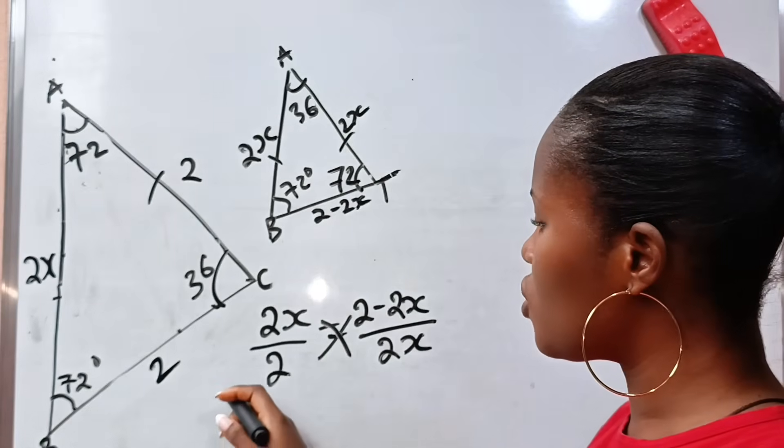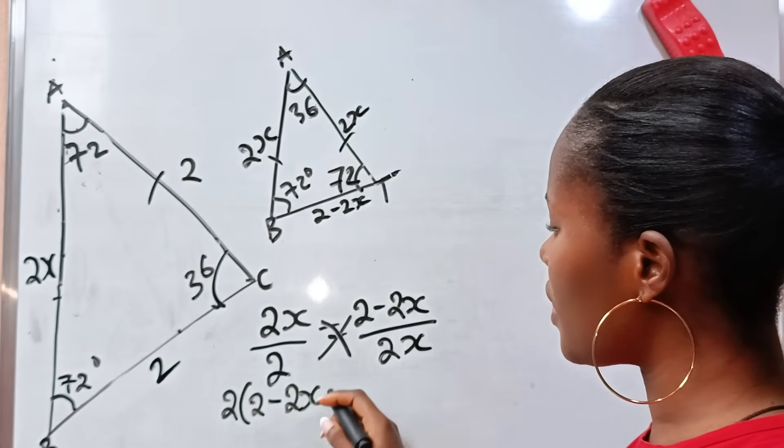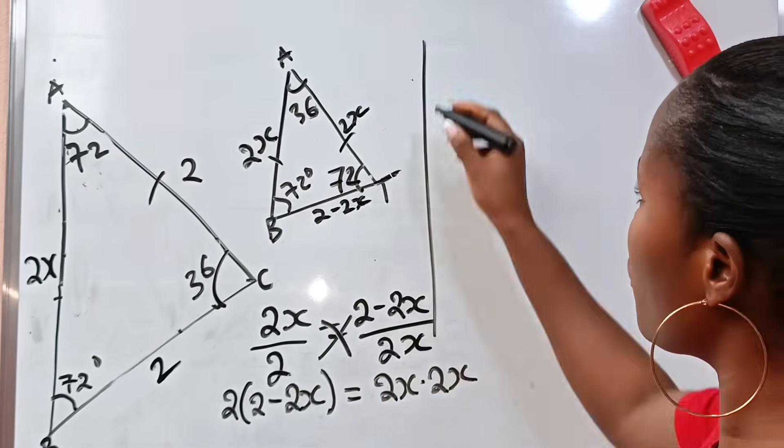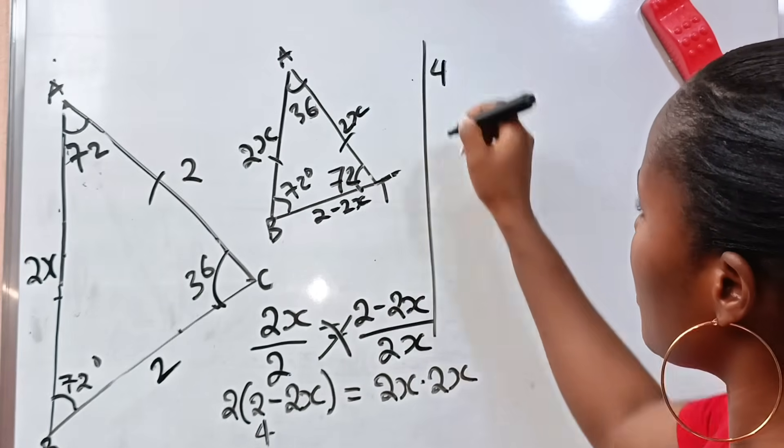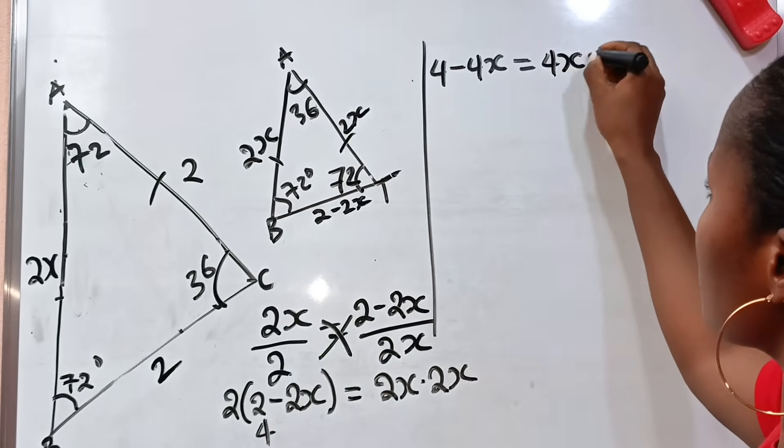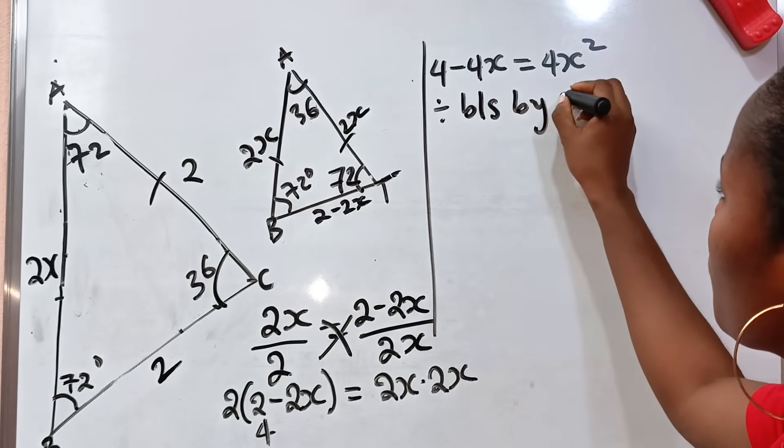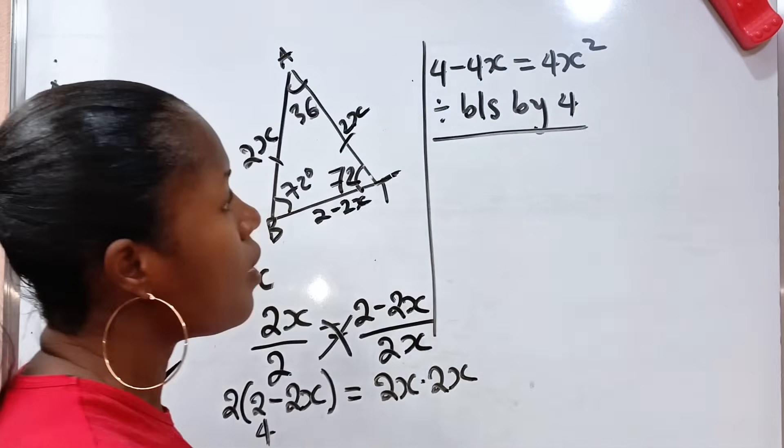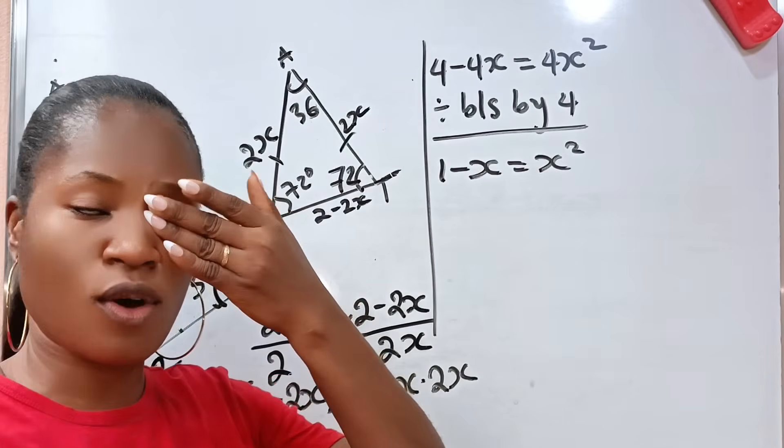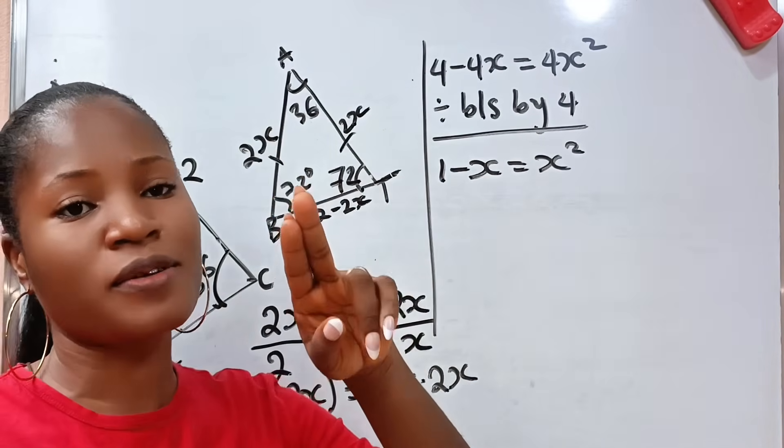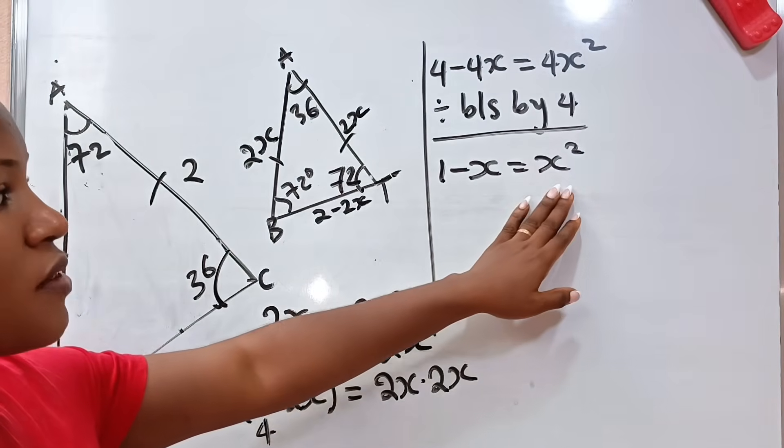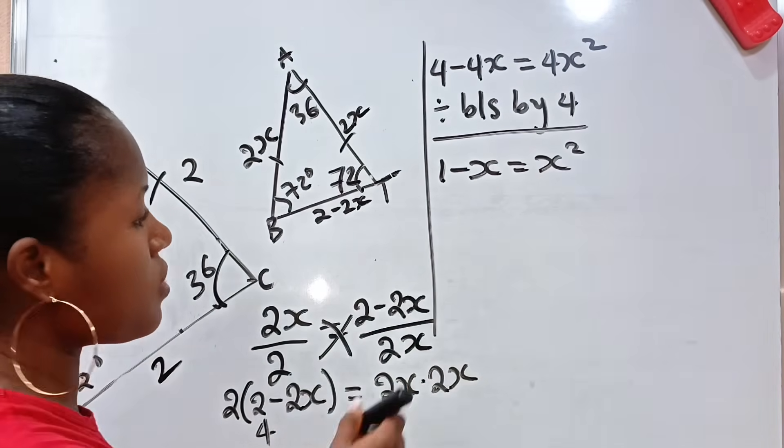So if we cross multiply, we have 2 brackets. 2 minus 2X is equal to 2X multiplied by 2X. So 2 times 2 will give us 4. 2 times minus 2X will give us minus 4X. 2X is equal to 2X times 2X, will give us 4X squared. Let us divide both sides by 4 in order to simplify this. If we do that, we have 1 minus X is equal to X squared.